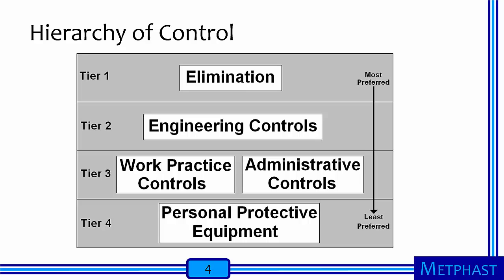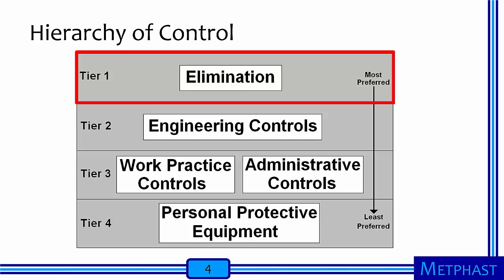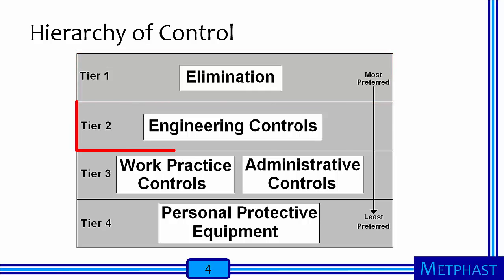Engineering controls fit within the broader context of the hierarchy of controls. The most preferred control is elimination of the hazard from the workplace. Sometimes referred to as prevention through design, hazards can be eliminated by changing the process to avoid certain chemicals, or hazardous chemicals can be substituted for less hazardous ones. Prevention through design works best when integrated in the development of a new process. Engineering controls are also preferred because they can be highly effective without requiring the involvement of the worker. Thus, the use of engineering controls reduces the potential for worker behavior to impact exposures. Ventilation is the primary engineering control.